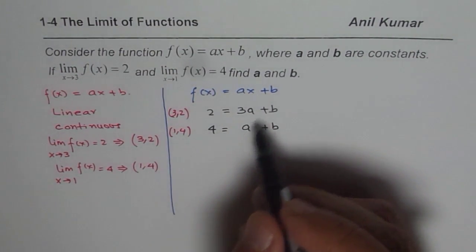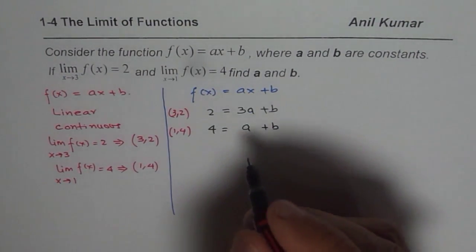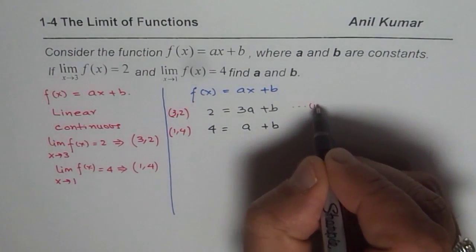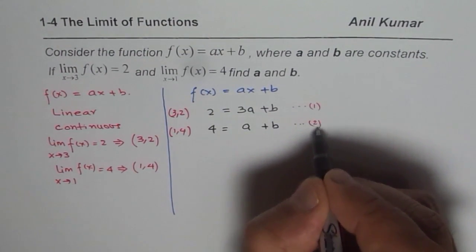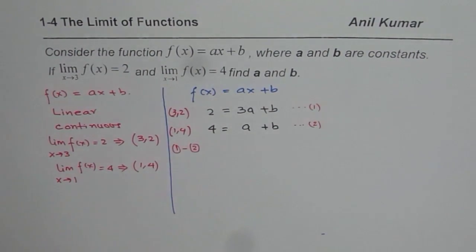Now from these equations, we can find the variables. So the best way is to take away, let us say this is equation number 1, this is equation number 2. And if I do equation 1 minus equation 2, what do I get?